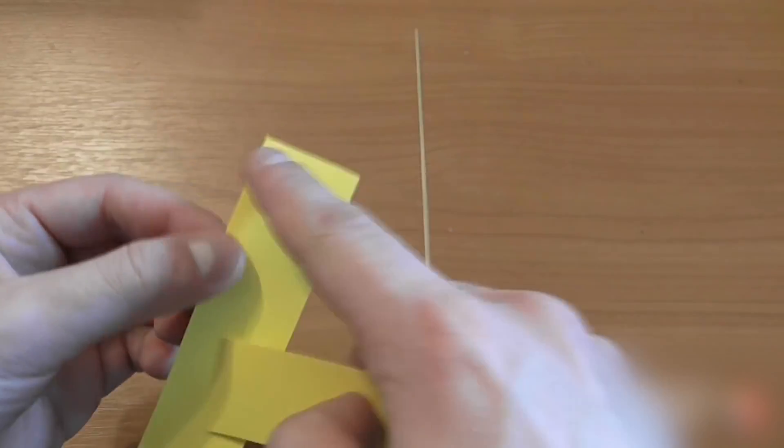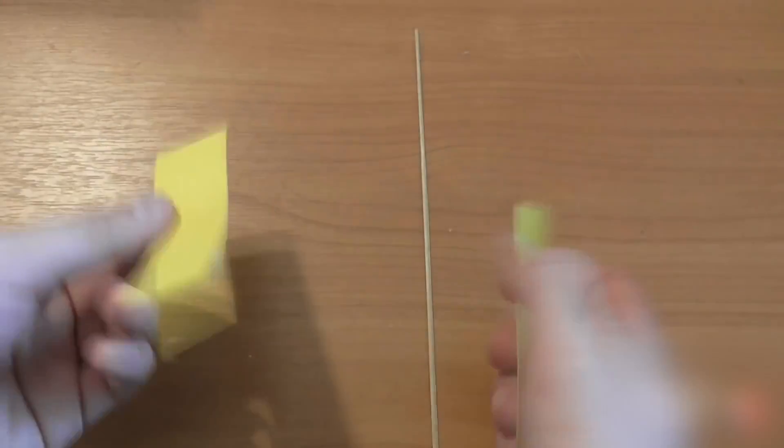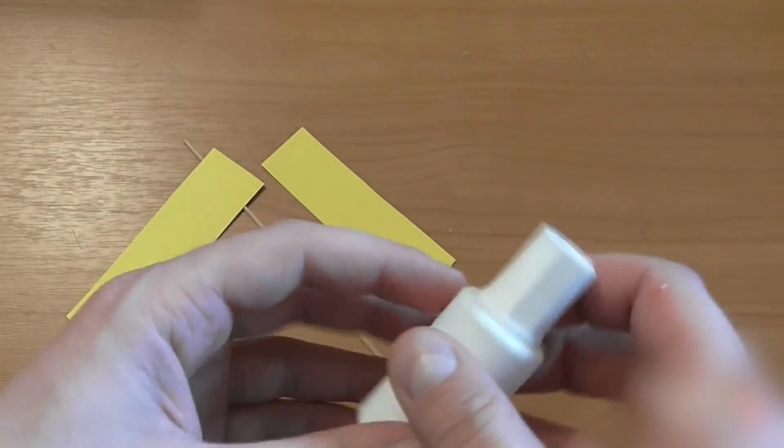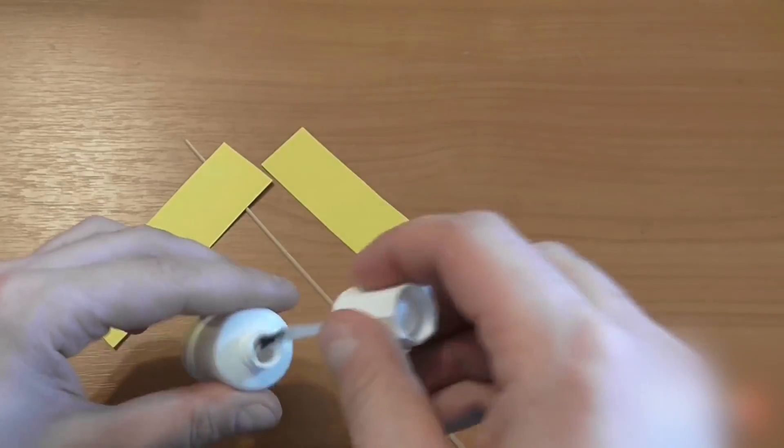Now I take the two pieces of 3 by 10 centimeter paper and glue them to the quartered stick. Use regular PVA glue.